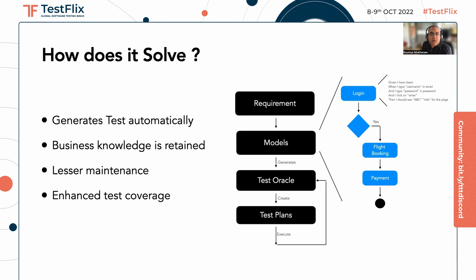Once you get the requirement, you can start generating the models. Who would generate the models? Developers, testers — anybody can create those models. It basically generates a test oracle, which is nothing but your pass or fail conditions. You can then design your test plans, execute them, and feed it back to the test oracle, which will basically tell you whether it's a green or a red status. When you run the tool, you would see that it is spitting out all the test case formats or the feature formats, and that's how you would attain maximum test coverage.